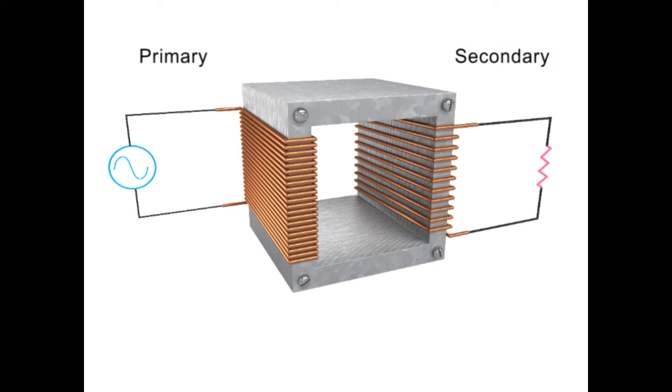The two coils are well insulated from each other and do not form a physical electrical connection. This gives a transformer its unique electricity altering properties.